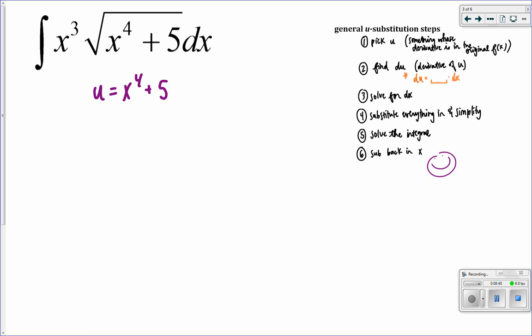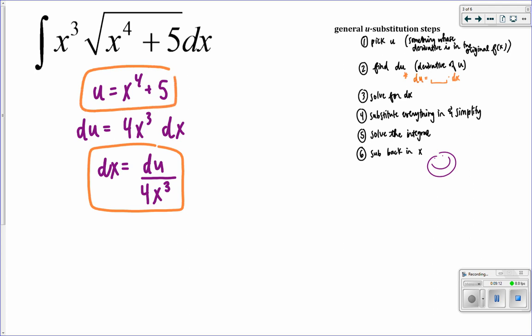Step two, then, is to find du, the derivative of u. Or, 4x cubed times dx. Now, we're going to solve for dx. dx is really du divided by 4x cubed. And now I have all the pieces I need. I have this, I have that. I'm going to use my original integral and substitute those in.